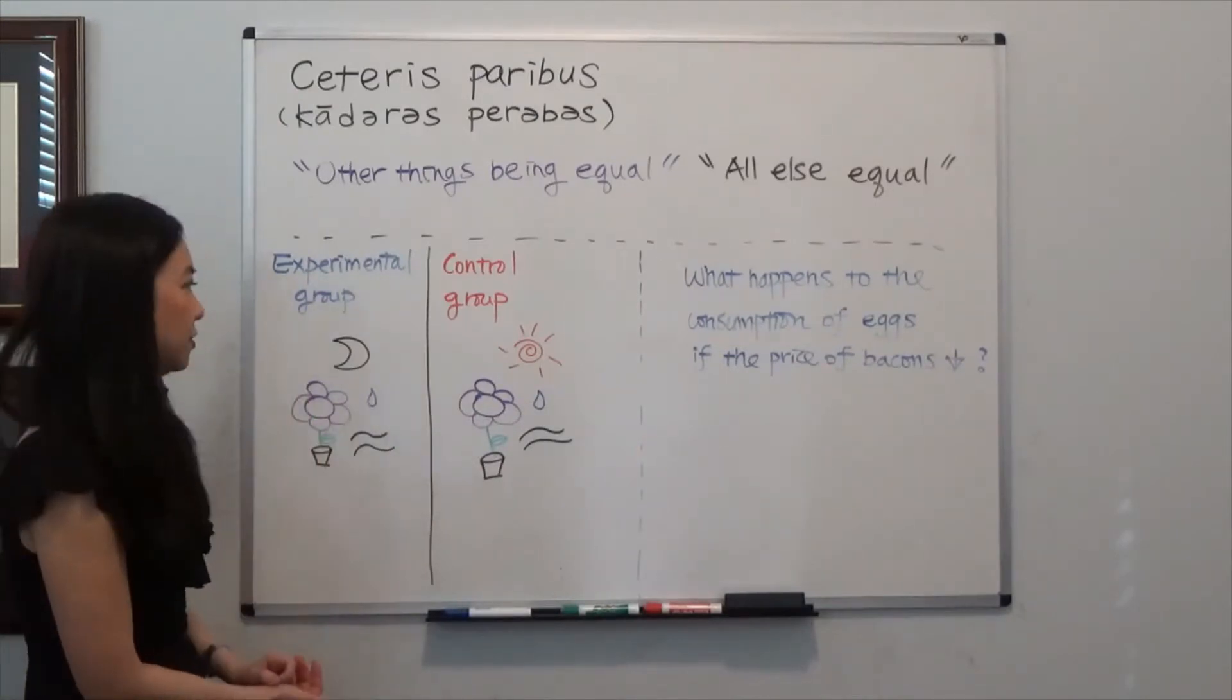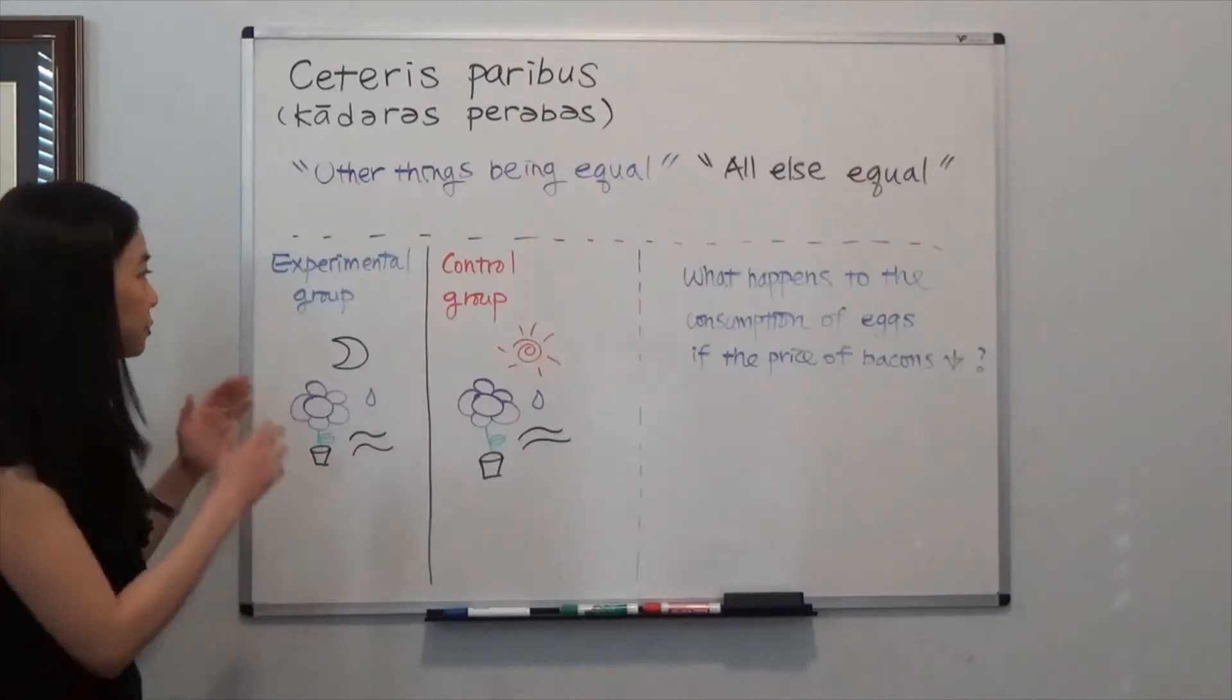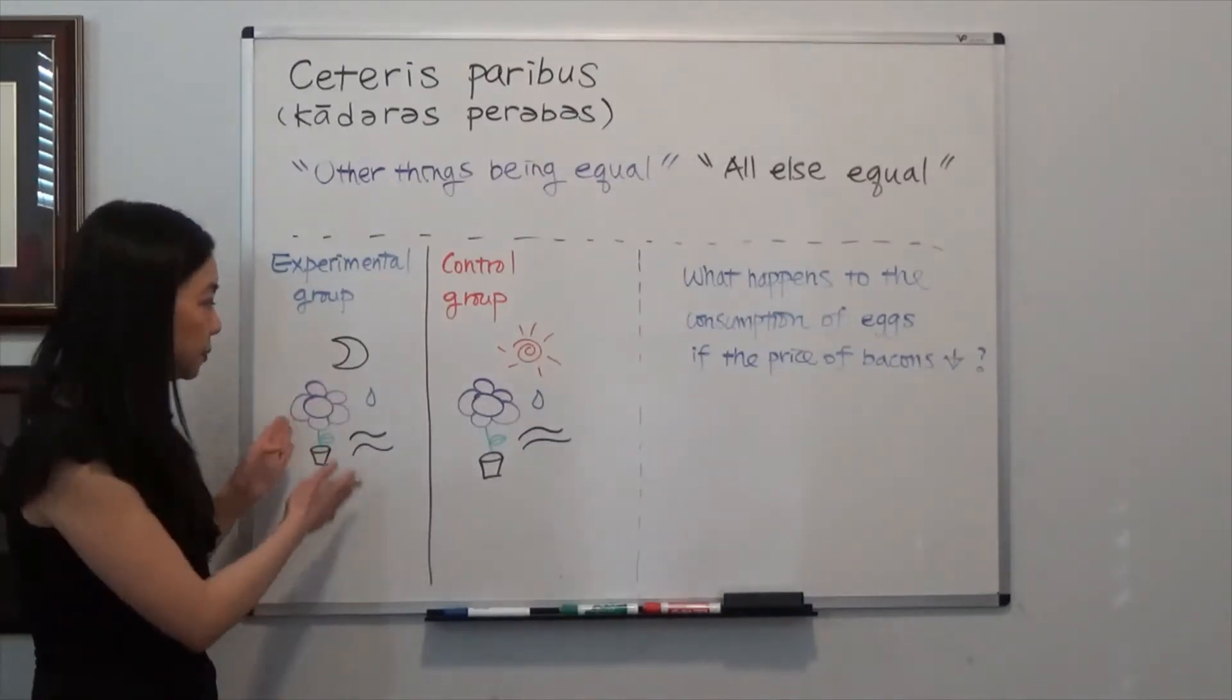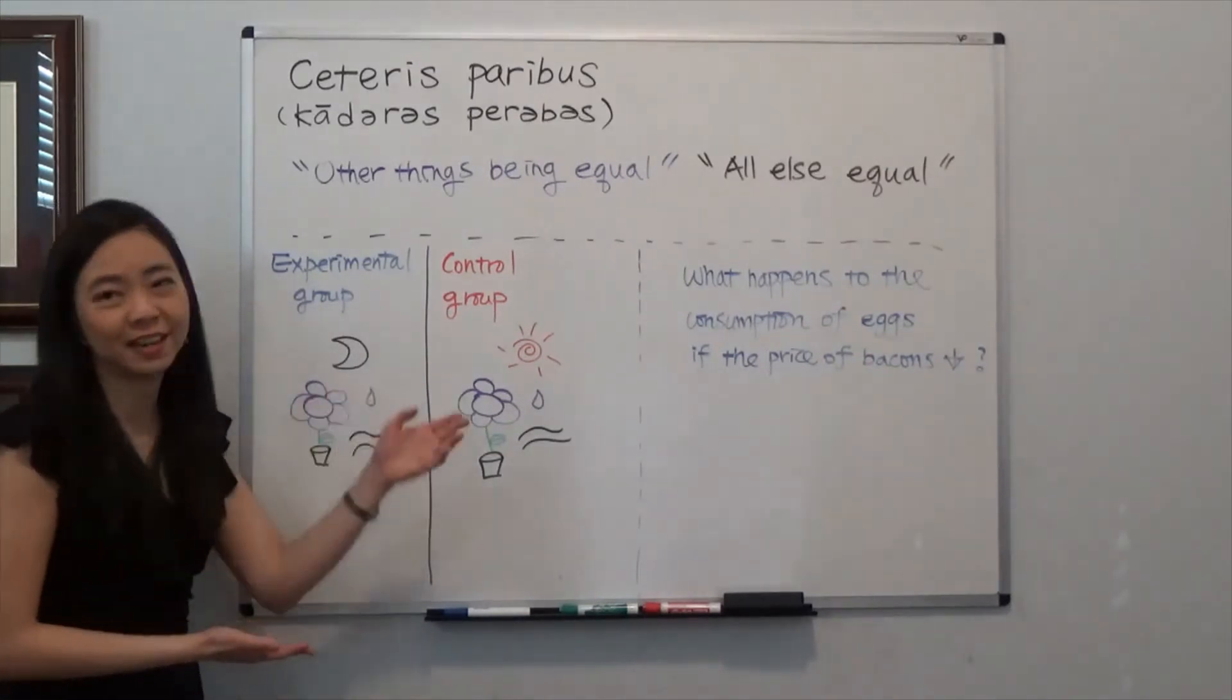And the only difference is the sunlight. Now after a few days, you find that the experimental group, this plant is dead. Then you can conclude that this plant is dead because of the lack of sunshine.